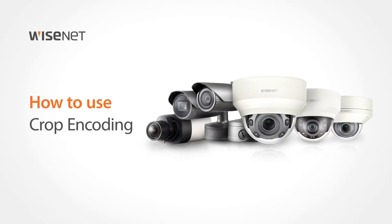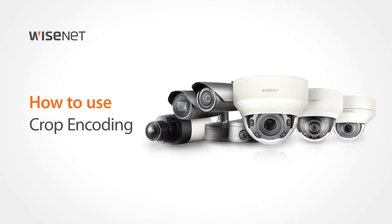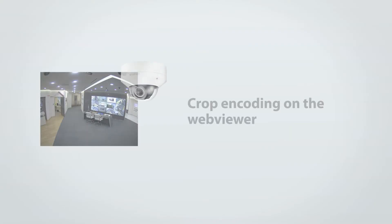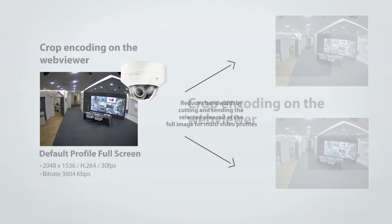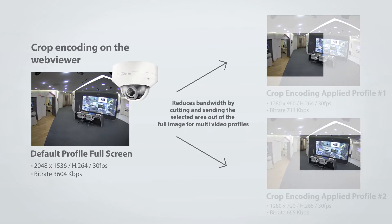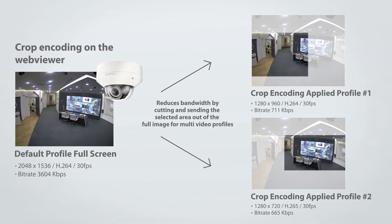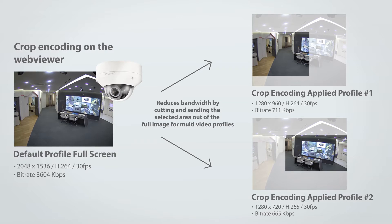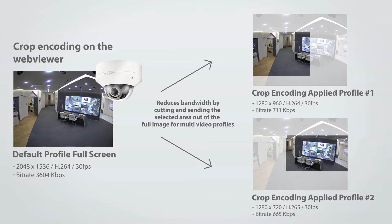Welcome! This video will show you how to use crop encoding on the WebViewer. Crop encoding is a function which only cuts the desired area from a full image and generates outputs with the supported resolution for multi-video profiles. This helps reduce the image size and the bandwidth, as you can cut and send only the desired part of the image.